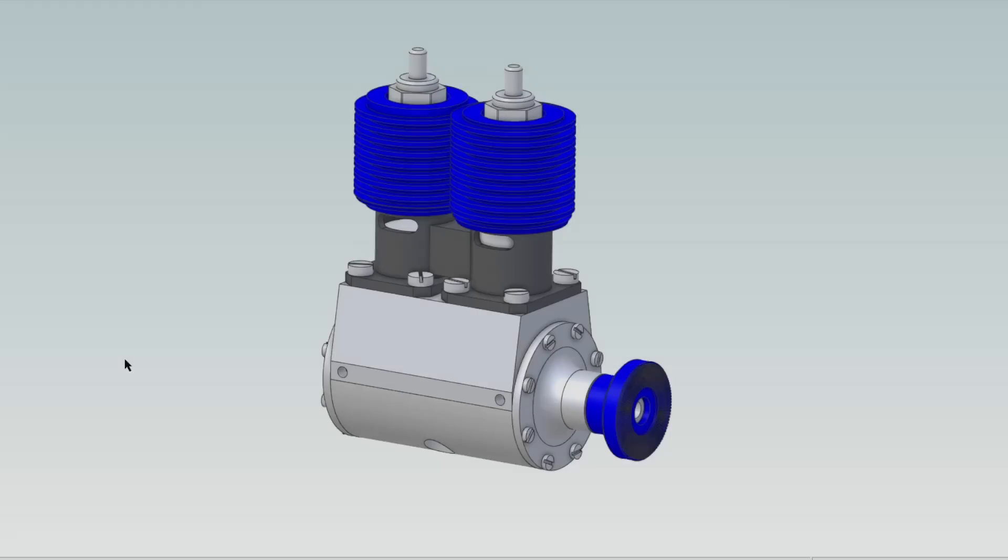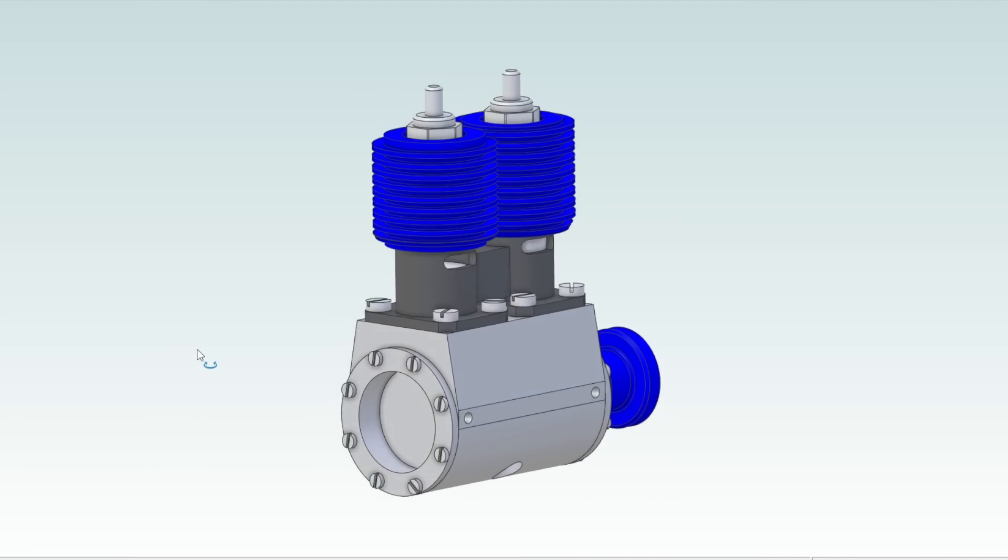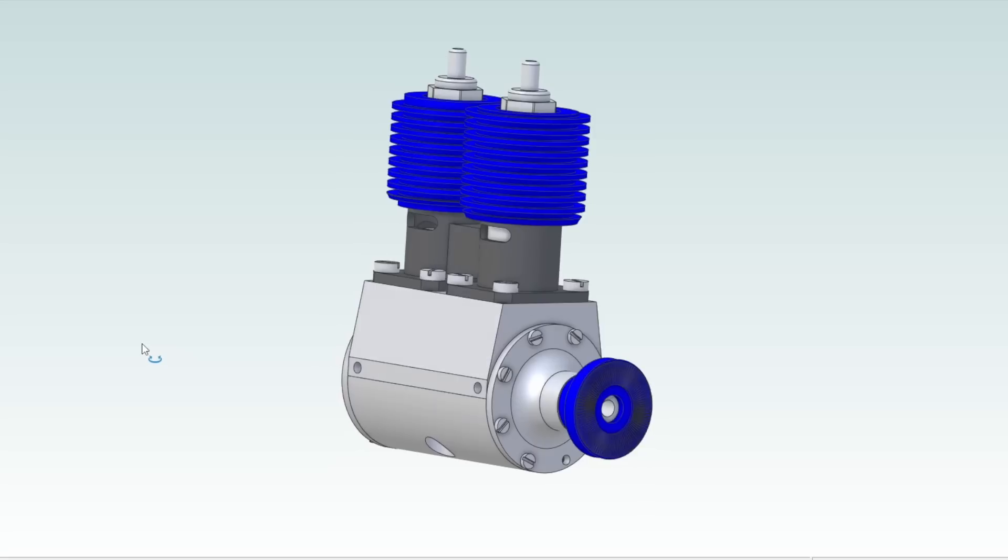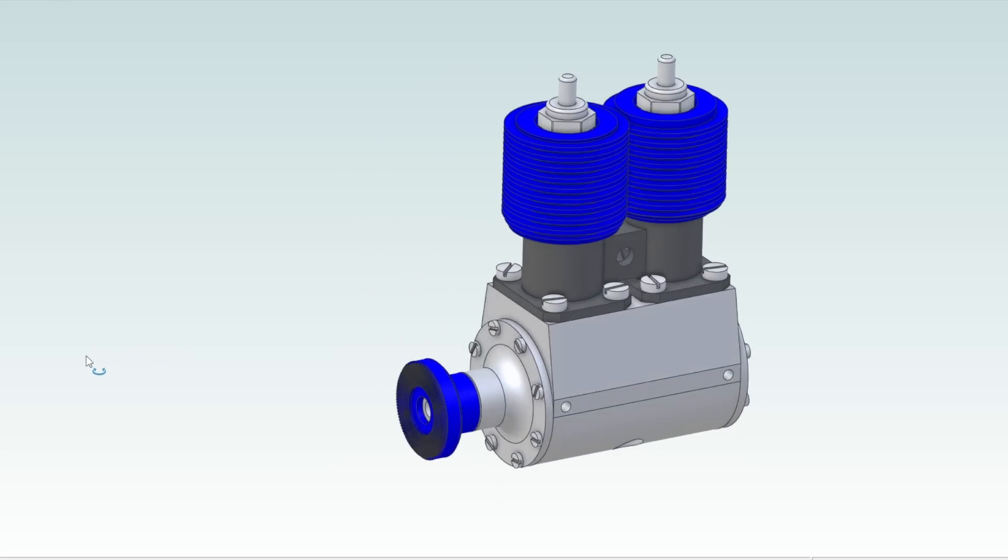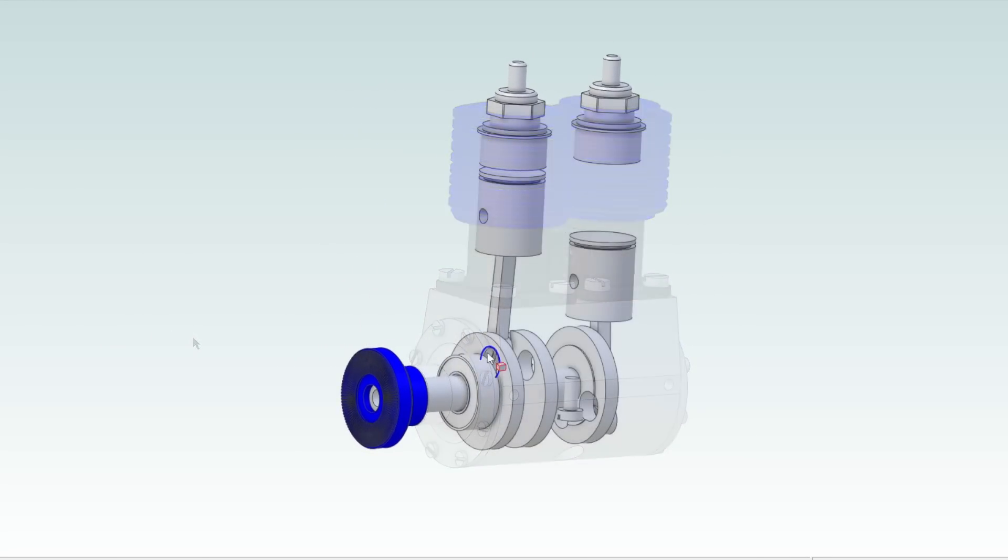So I got to thinking, if one cylinder is not quite enough then maybe two cylinders will be. So here's what I came up with. This is more or less the same engine with just a few adjustments, basically two of them stuck together which will make for 2cc's displacement.